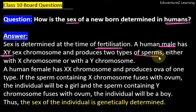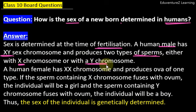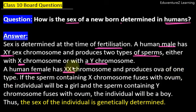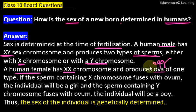Jitne bhi sperms produce hootay hai, us mein 50% X chromosomes wale hootay hai aur 50% Y chromosomes wale hootay hai. A human female has X and X chromosomes. Unke paas dhono sex chromosomes X aur X he hootay hai, and she produces ova of one type — egg create karthi hai, jis se sperm ja ke fertilize hota hai.